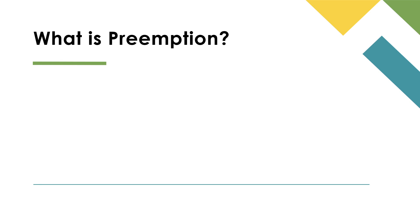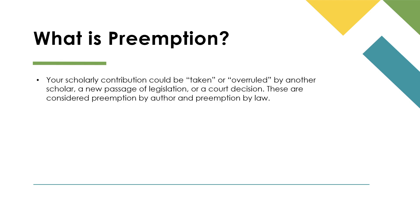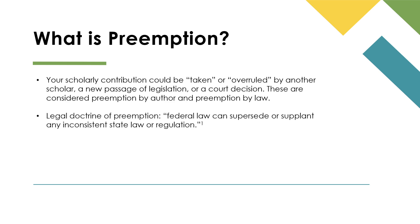So what exactly is preemption? In terms of scholarly writing, preemption is when your unique argument or contribution has been taken or overruled by another scholar. It could also be overruled by a passage of legislation or a court decision, which would render your arguments moot. It's vital to do thorough research to make sure that what you think is your original and unique idea hasn't already been written or resolved somewhere else. Another way to think of preemption is to compare it to the legal doctrine of preemption from the Constitutional Supremacy Clause, which states that a federal law can supersede or supplant any inconsistent state law or regulation.